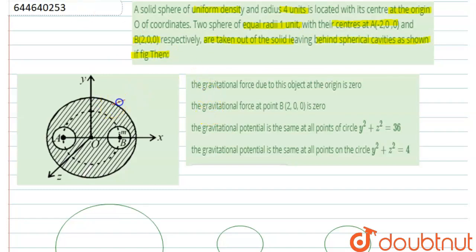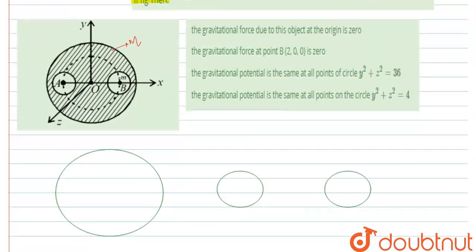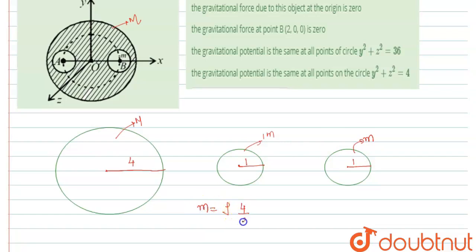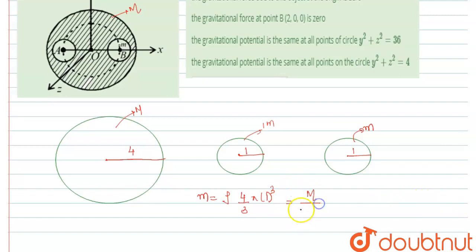If we consider the total mass of this sphere is M, then the mass of this complete sphere is capital M and the radius is 4 units. The radius of a small cavity is 1 unit. The mass of both small spheres is small m, equal to density into volume, which is (4/3)π(1)³. Writing density as M divided by (4/3)π(4)³, the mass of a small sphere equals M/64.